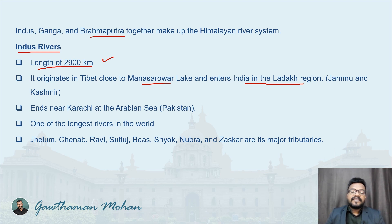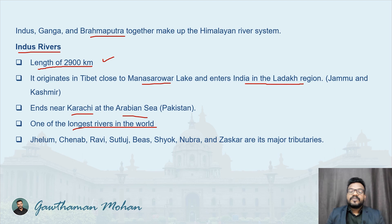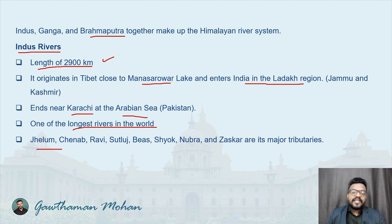The Indus ends near Karachi at the Arabian Sea, which is in Pakistan, so it is actually flowing towards Pakistan. It is one of the longest rivers in the world, though not the longest in India, because the majority of its course lies in Pakistan. The longest river in India is the Ganges. Jhelum, Chenab, Ravi, Sutlej, Beas, Shayok, Nubra, and Zaskar are its major tributaries.